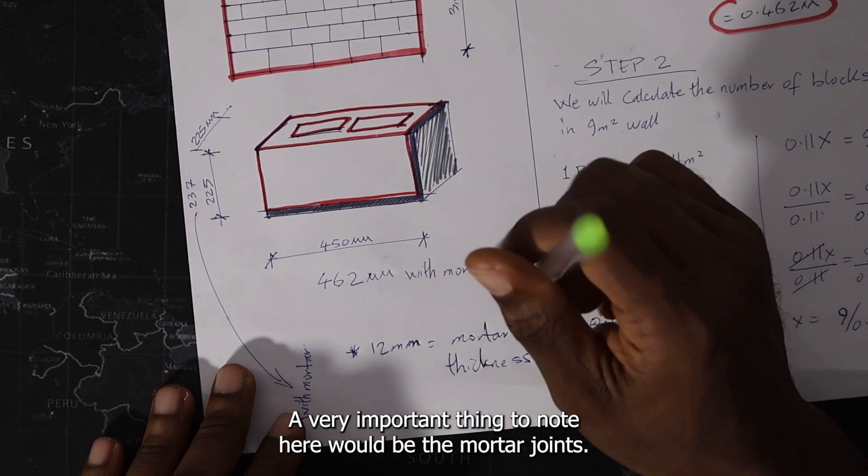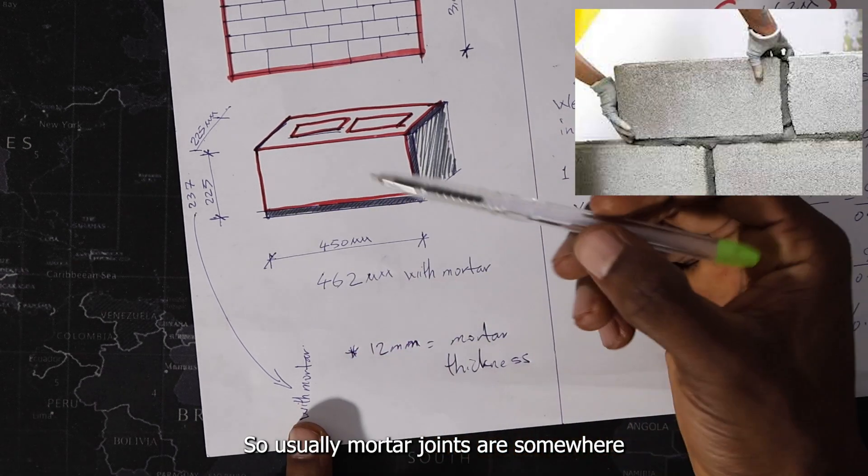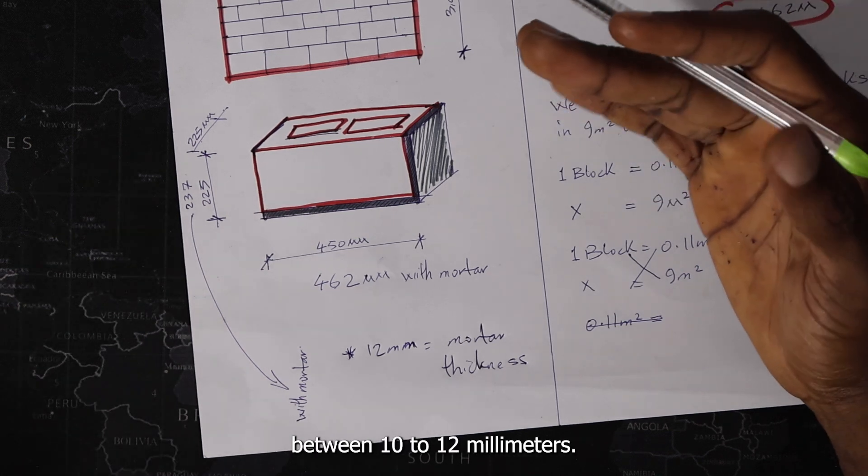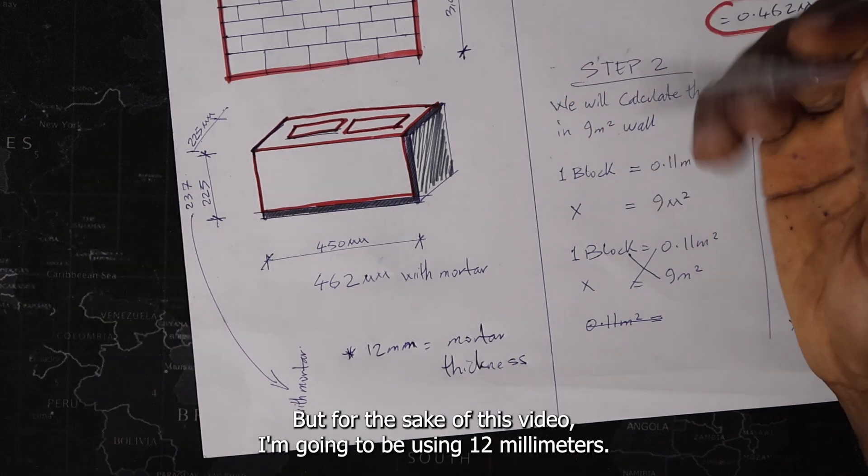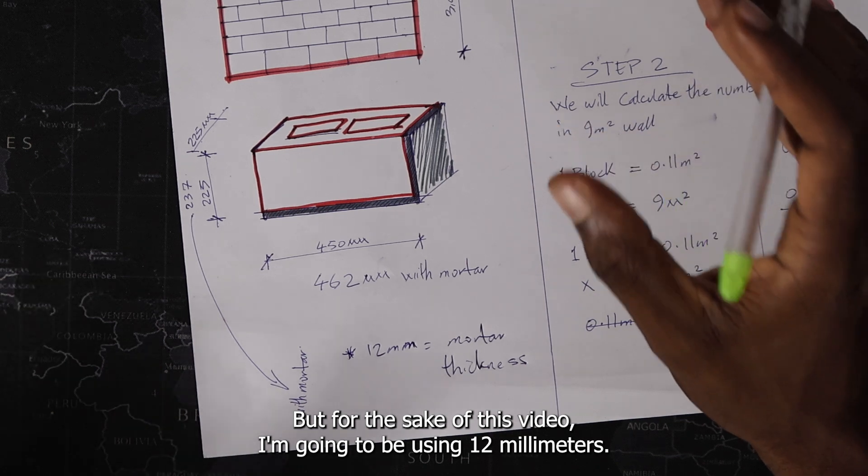A very important thing to note here would be the mortar joints. So usually, mortar joints are somewhere between 10 to 12 millimeters. But for the sake of this video, I'm going to be using 12 millimeters.